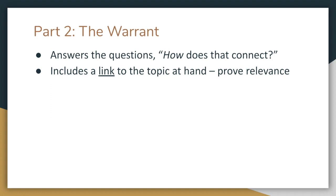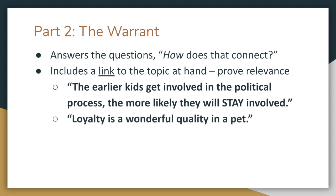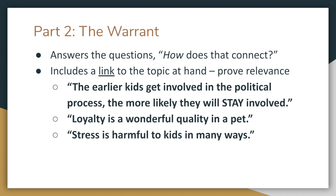Because the warrant is essentially linking the claim to the impact, which is the part that comes later. You need to prove that your claim is not just true, but also that it's relevant. I could get up there and claim that the sky is blue, but if you're here arguing about the voting age, you probably don't care very much. So, for example, with that voting age claim, we could say the reason it matters that teens can vote earlier is because if they get involved in the political process earlier, they're more likely to stay involved. You could claim that dogs being more affectionate or loyal than cats is important because loyalty is a wonderful quality in a pet. And you could do a warrant for the homework argument by explaining that stress is harmful to kids in many ways.